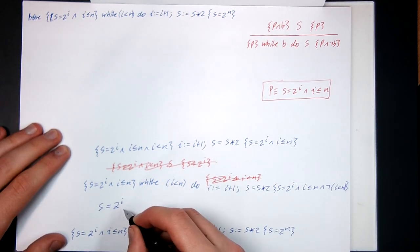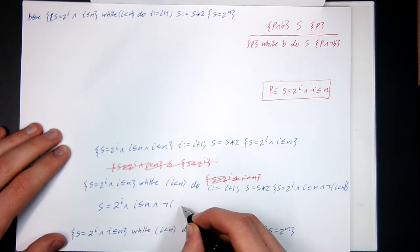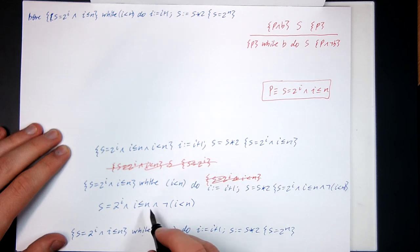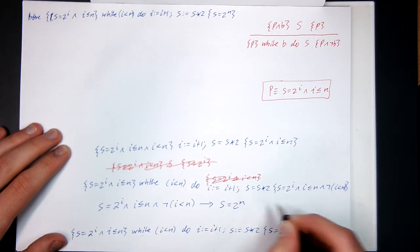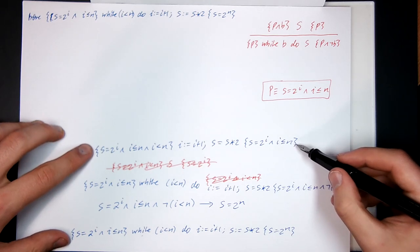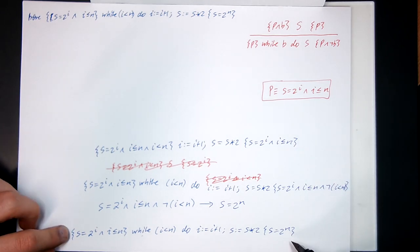If S equals 2 to the I and I is less than or equal to N and it's false to say that I is strictly less than N, these two conditions here imply I must be equal to N combined with this condition means S equals 2 to the N. So if I can prove this I can use while rule to get this and I can weaken the post condition to get this. Cool.